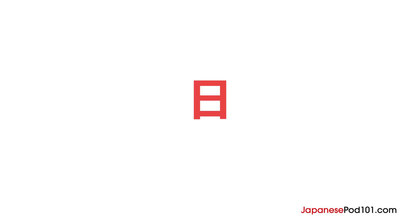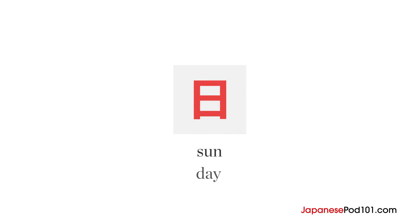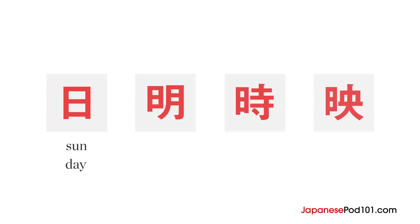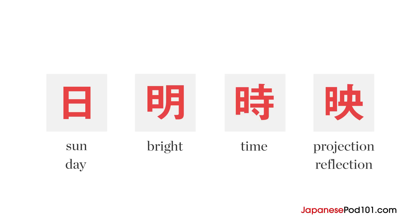The day radical is a kanji character on its own. It's a pictogram of the sun and it means sun or day. From left to right, the first kanji means sun or day, the second means bright, the third character means time, and the fourth character means projection or reflection.